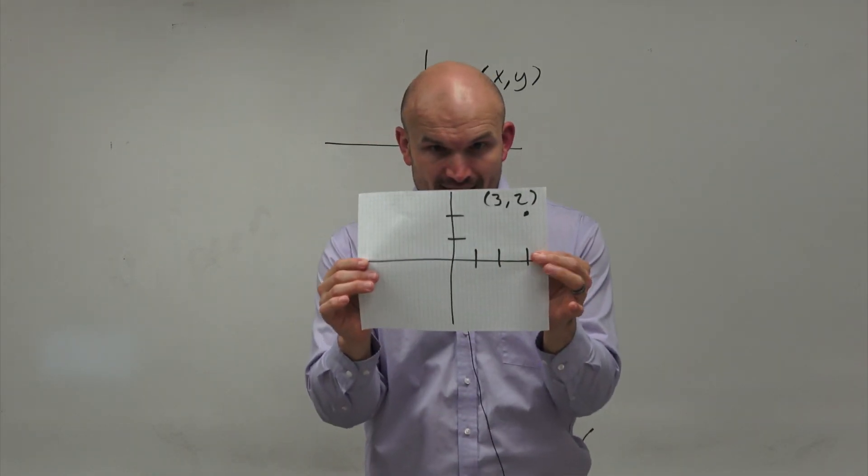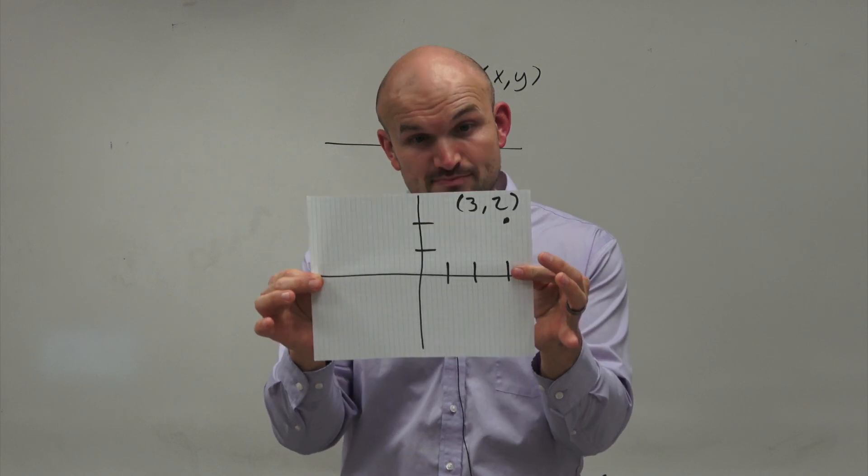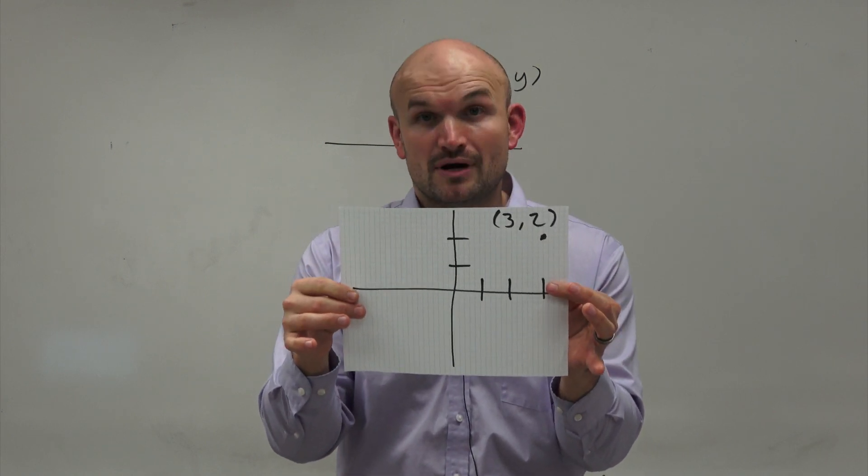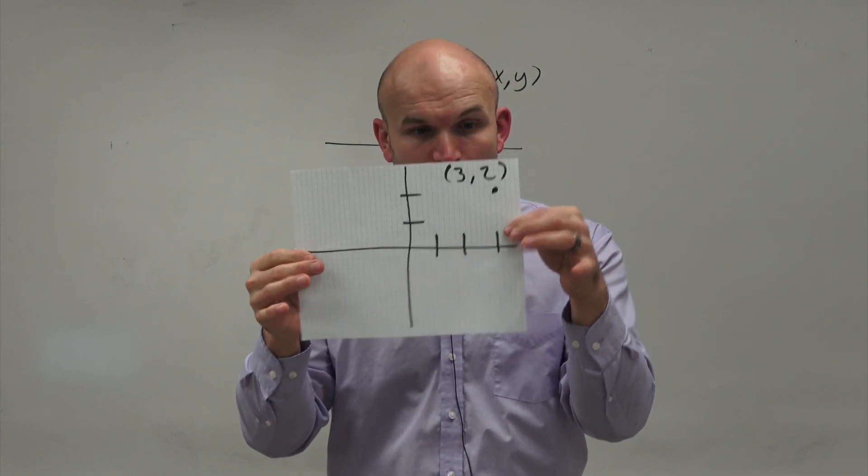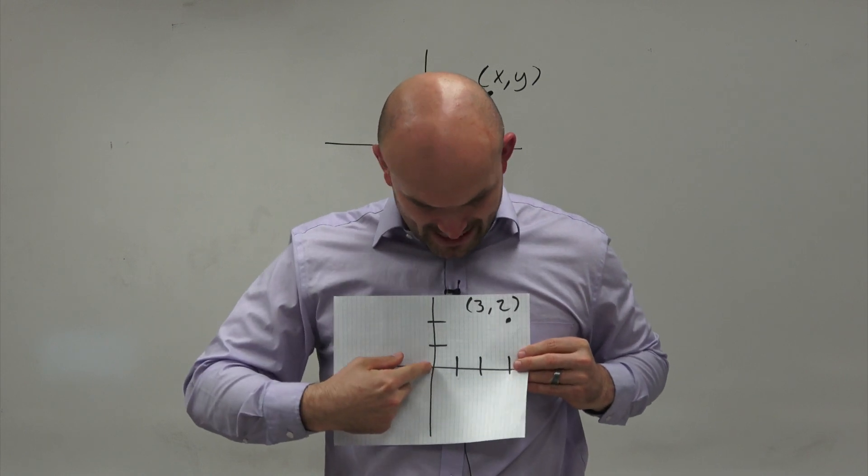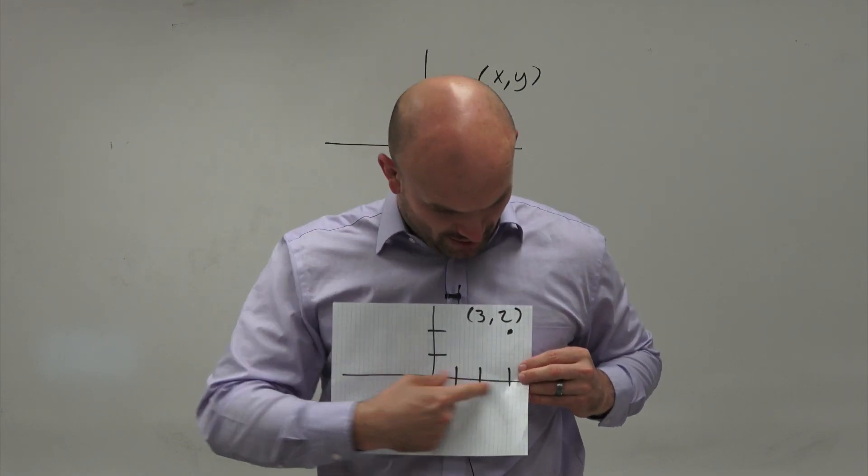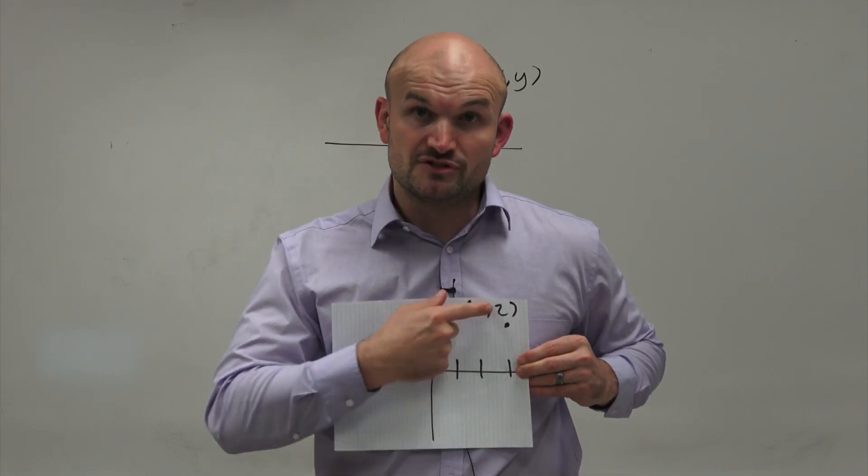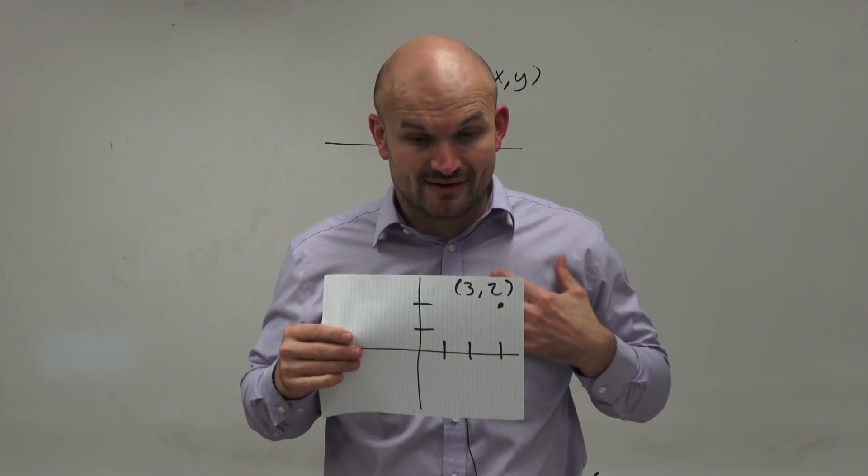Now, what I want you to understand here is what happens when I rotate this point. And let's go clockwise. When I take this point, you can see this point represents a horizontal distance away from the origin of 3 and a vertical distance of 2. Now, when I go ahead and rotate, now again, this is going to be clockwise.